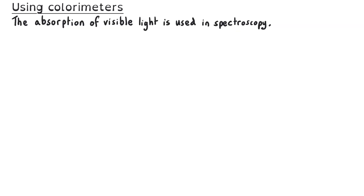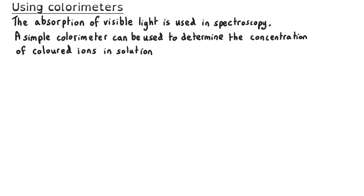As well as being able to see different colours of complexes with the naked eye, the absorption of visible light is used in spectroscopy. An example of this is the use of a colourimeter, which is a machine that measures the absorbance or transmittance of different frequencies of light. A simple colourimeter can be used to determine the concentration of coloured ions in solution, as well as to identify complexes and study their electronic structure.